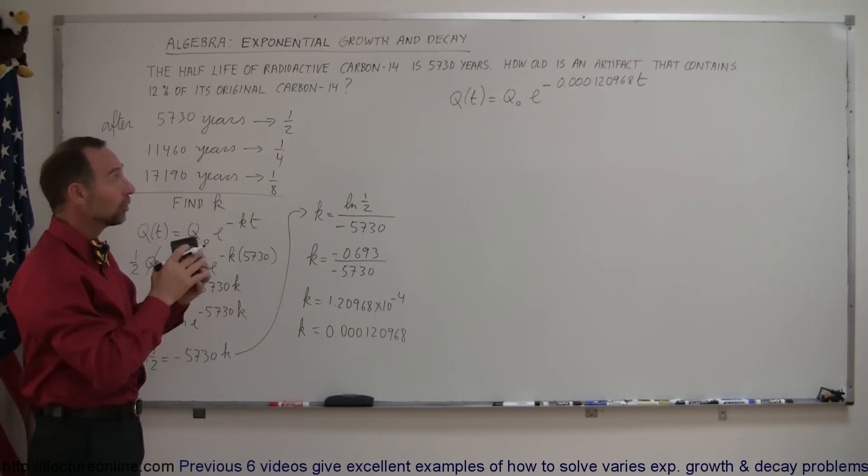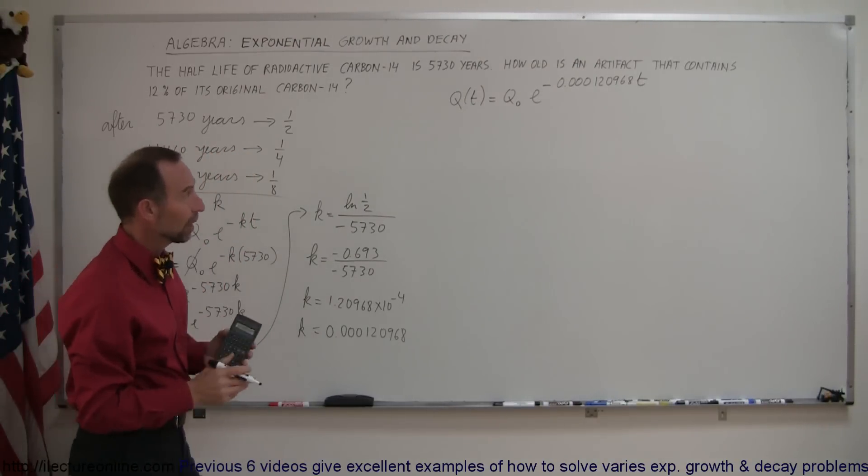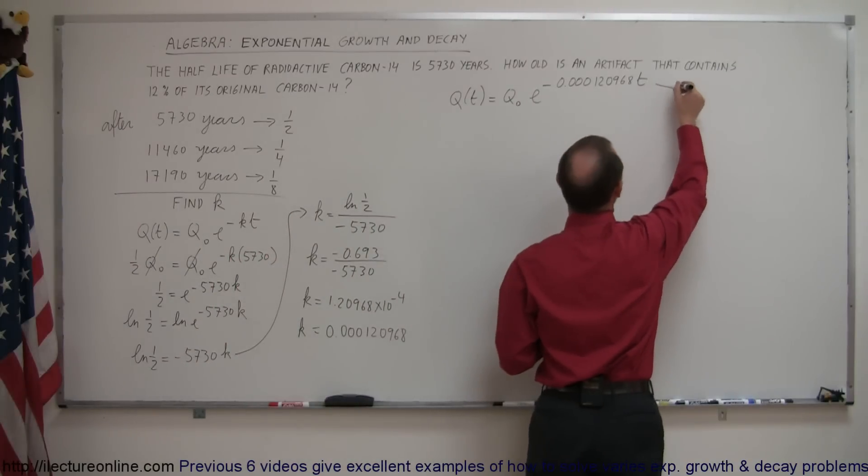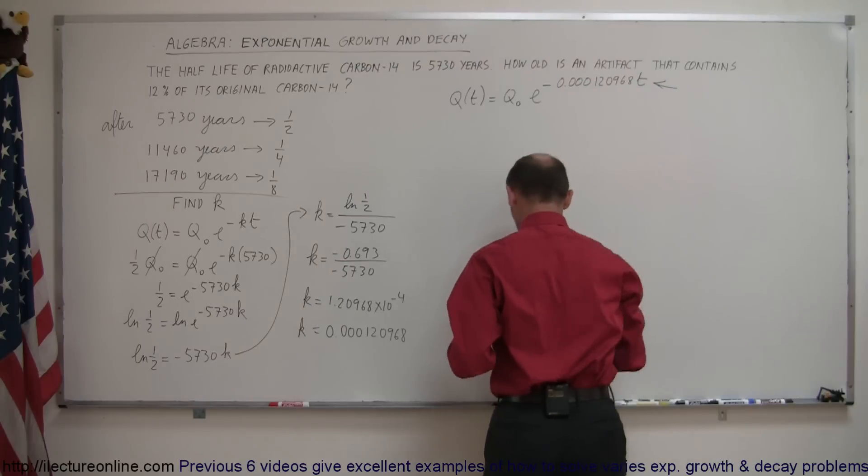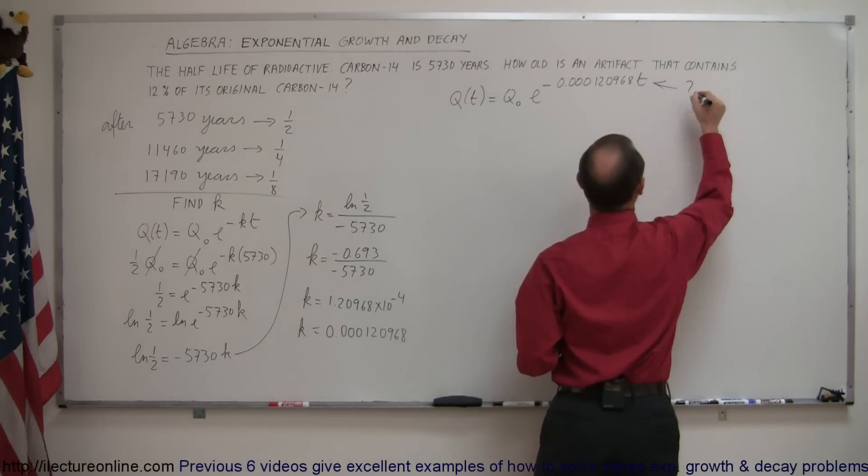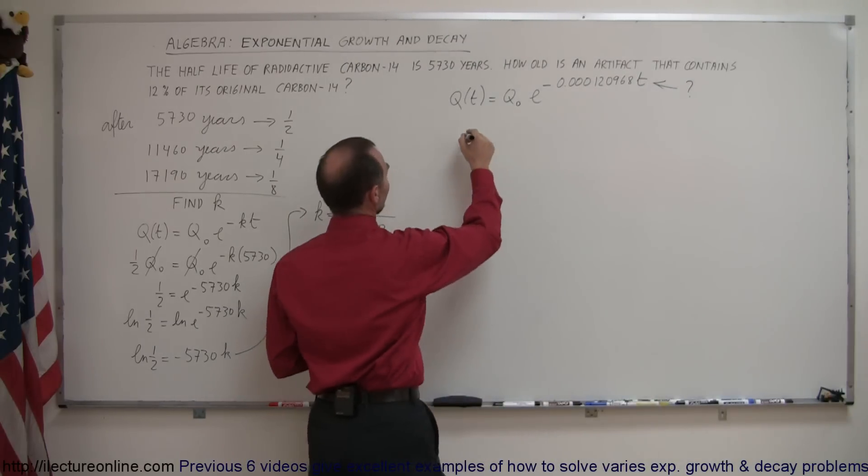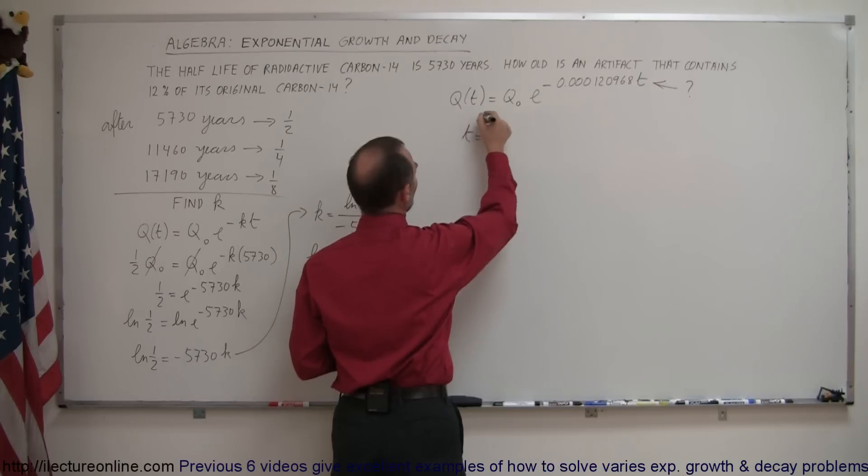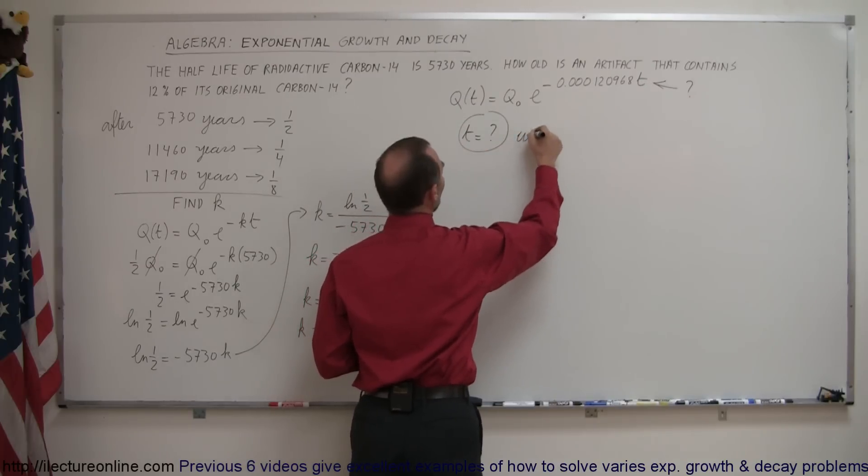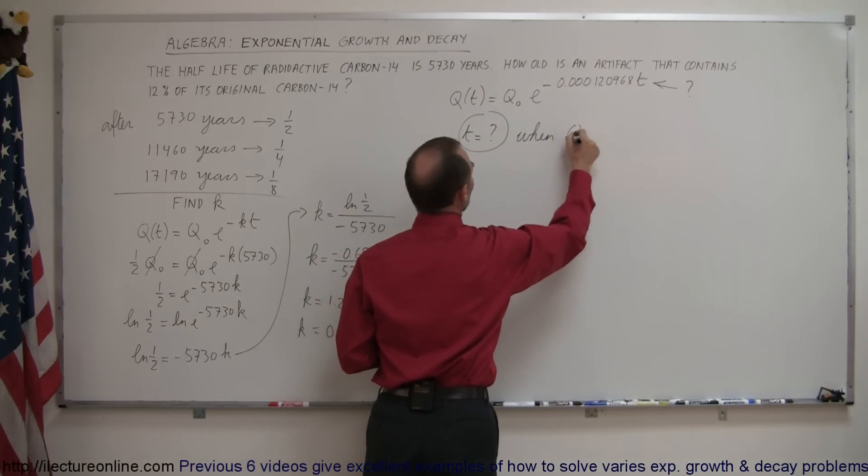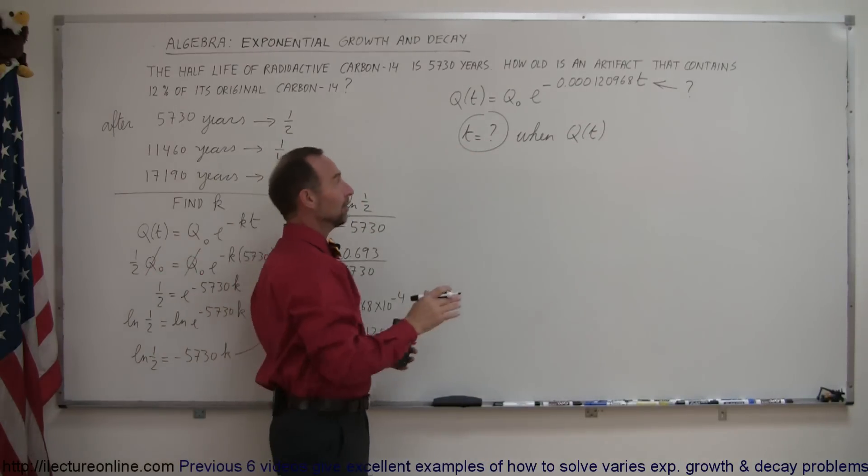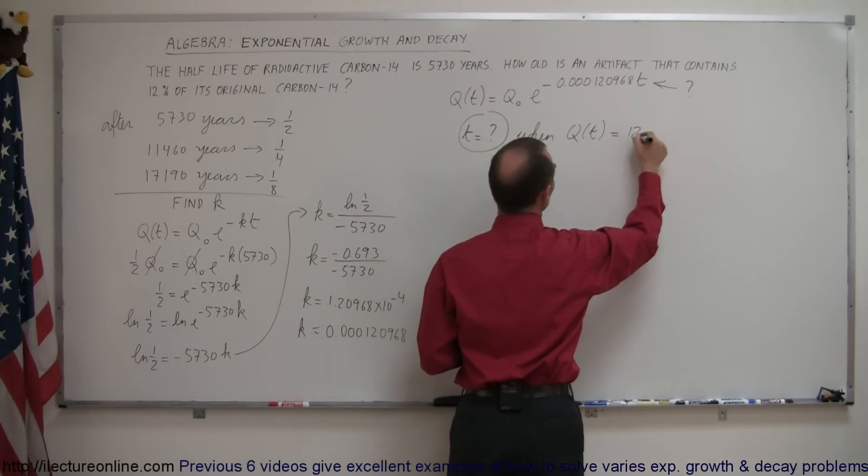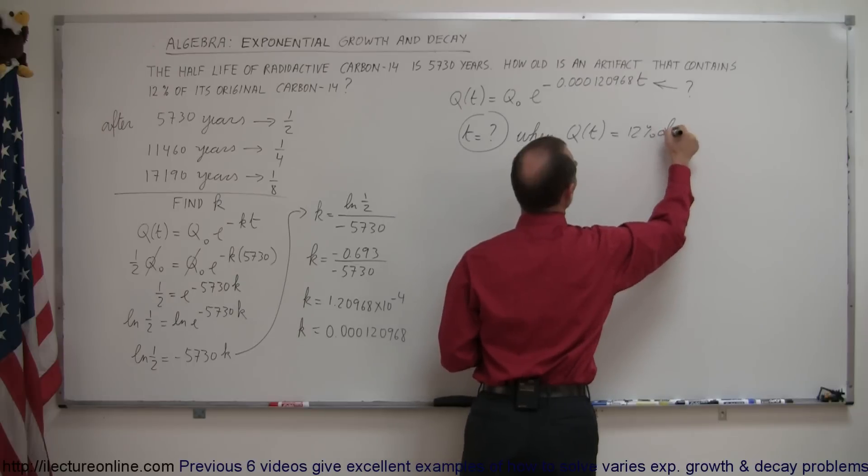Now, we can actually find out how old this artifact is. And so, what that means is we're looking for the time. So, we're actually looking for the time. So, essentially, time is equal to question mark. That's what we're looking for when the amount that we have remaining is equal to 12% of the original amount.